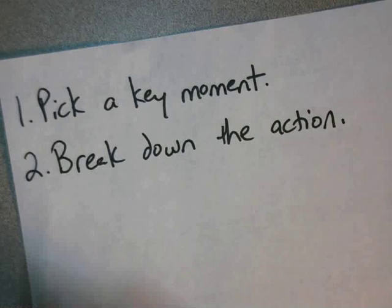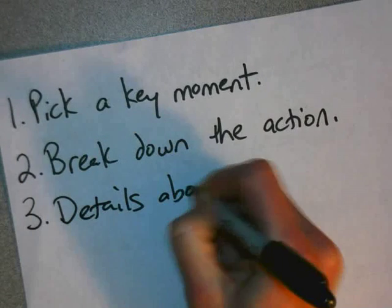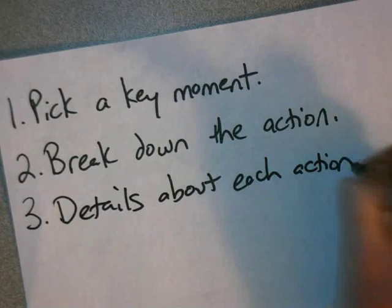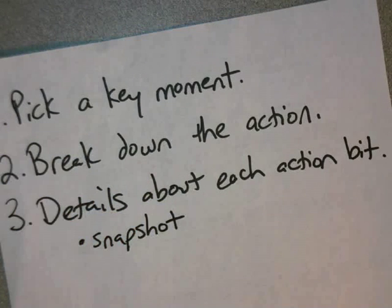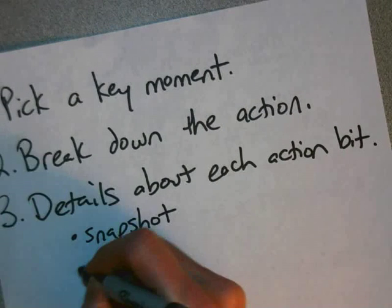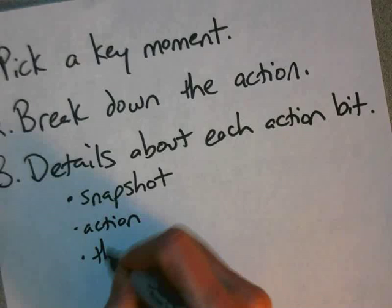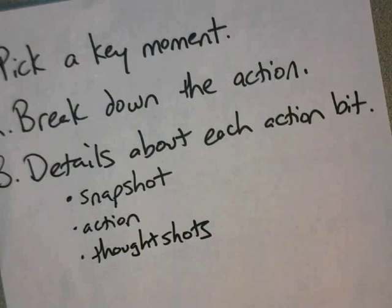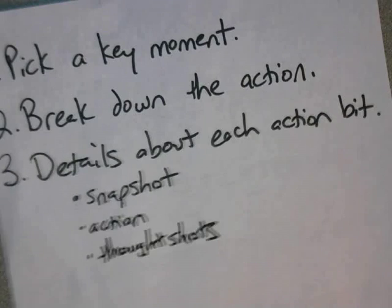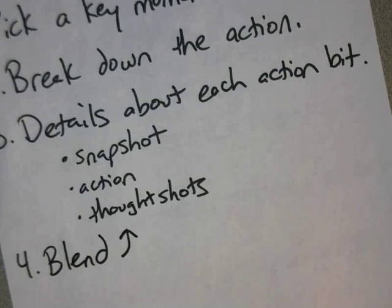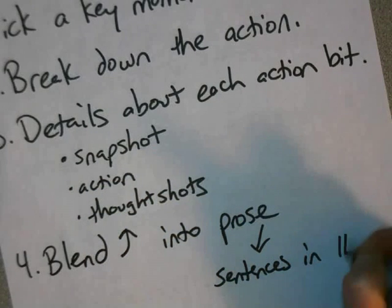Once you've broken down the action into a few steps like that, the next thing you want to do is brainstorm details about each of the bits of action. What kind of details? Well, you can snapshot like you learned in the previous lesson. You can think about even more specifically — minutely — what action is happening. You might also include characters' thoughts by way of thought shots. Then your last step is to blend all of this into prose, which is the fancy word for sentences that are in paragraphs.